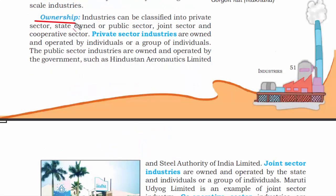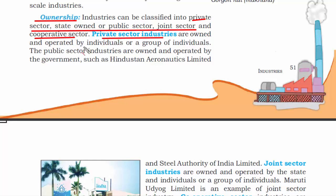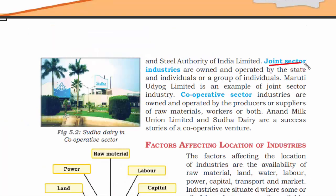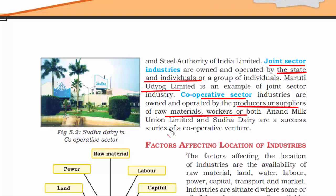The last factor is ownership. Based on ownership, industries are classified into private sector, state-owned or public sector, joint sector, and cooperative sector. Private sector industries are owned and operated by individuals or a group of individuals. Public sector industries are owned and operated by the government. Joint sector industries are owned and operated by the state and individuals together. In the cooperative sector, industries are owned and operated by the producers or suppliers of raw material.